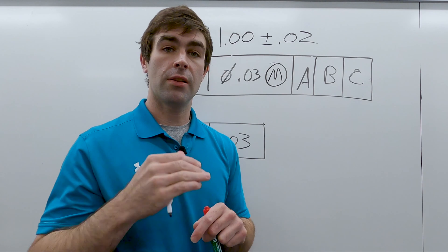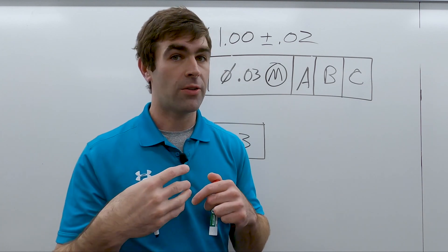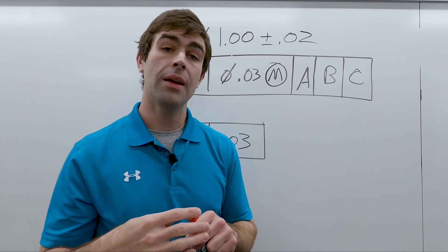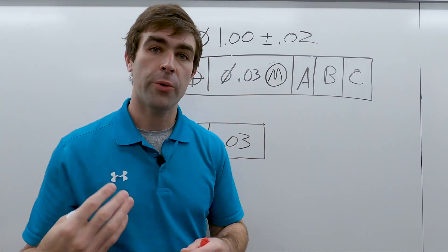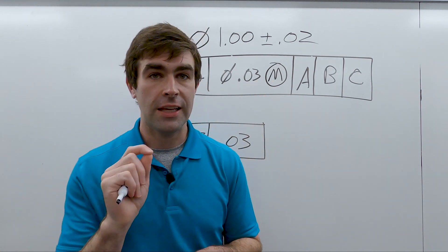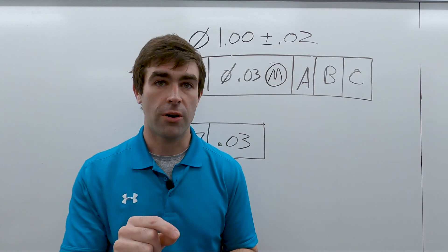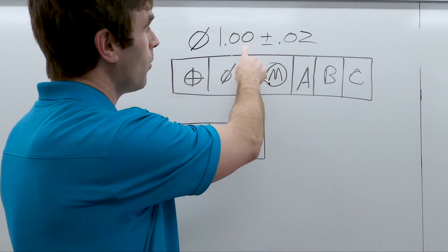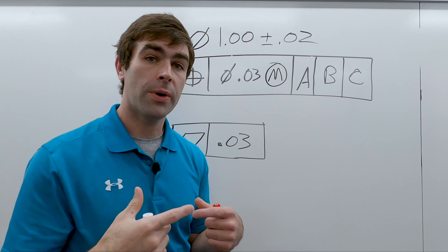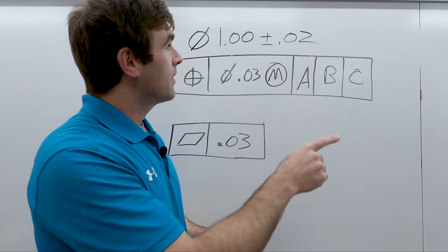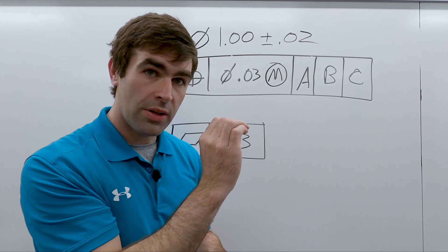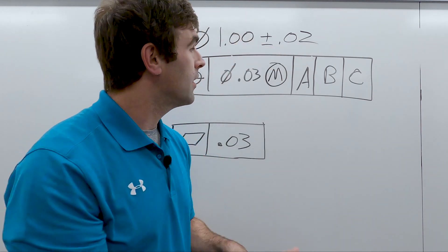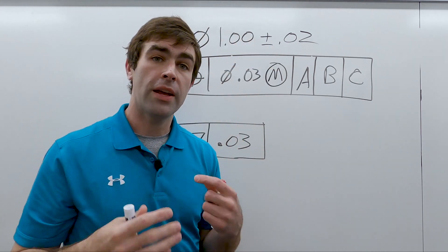If the hole comes in larger—remember, the tolerance applies only at MMC. If the hole comes in larger, you get more location tolerance equal to that departure. So if this hole comes in at 1.02, that's a 40 thou difference from the smallest it can be, the MMC, to what it is. You can add that to your location tolerance.